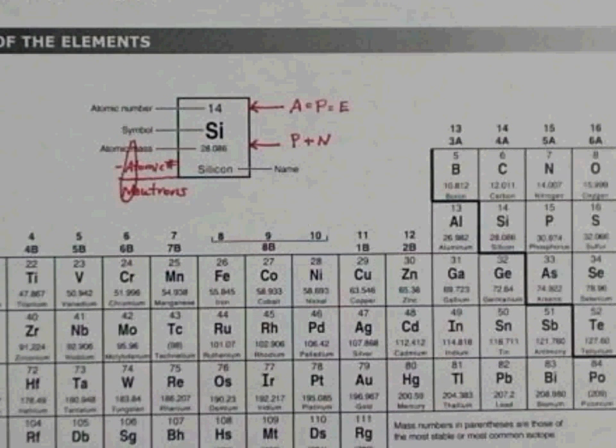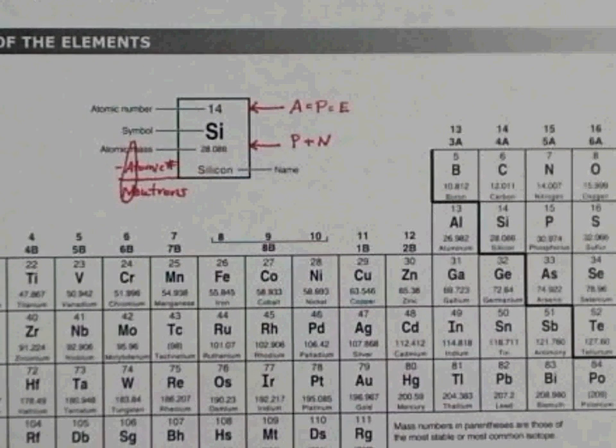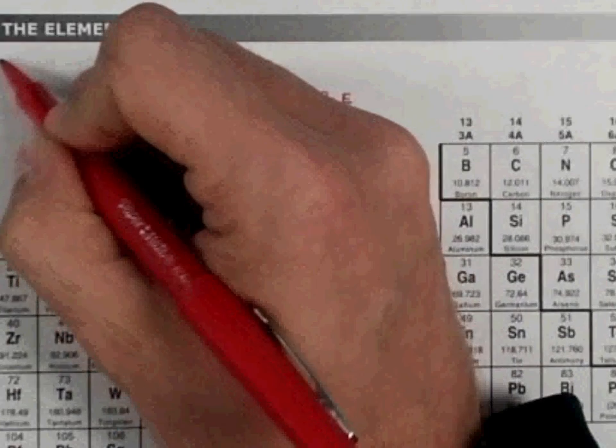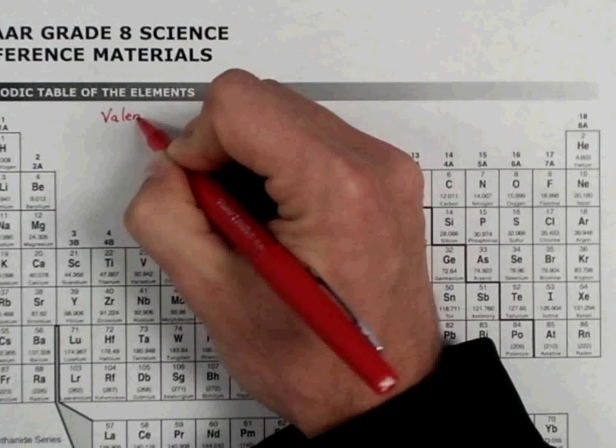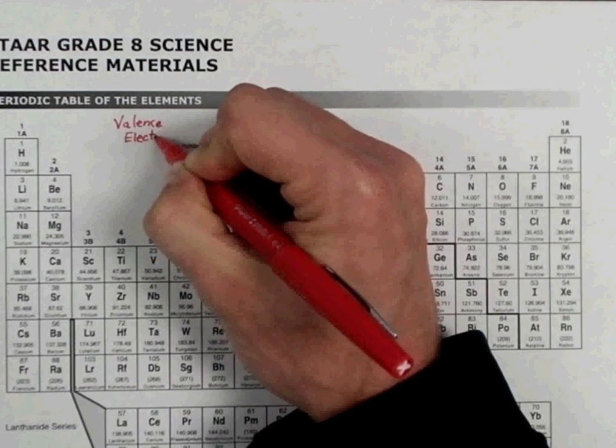Fourth, we're going to talk about where the valence electrons are on the periodic table and how you can determine how many valence electrons each particular element has. So I'm going to write valence electrons up at the top here, and then I'm going to draw some arrows to each of the groups and families.